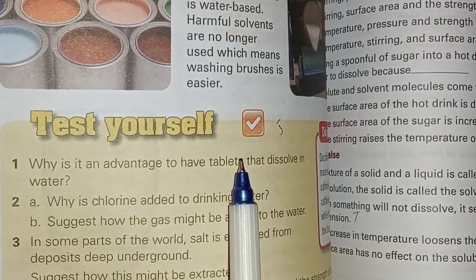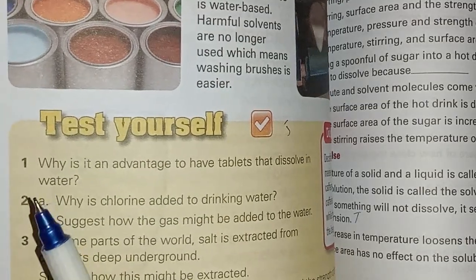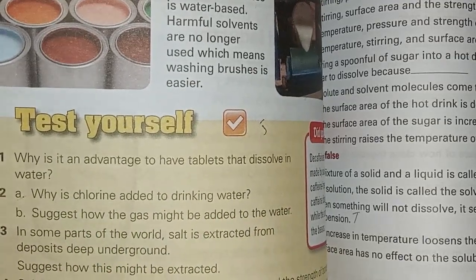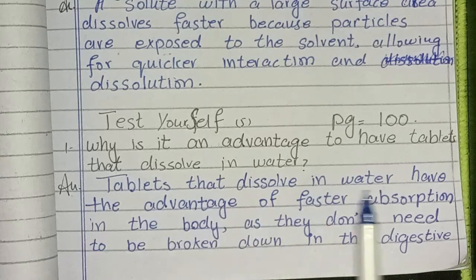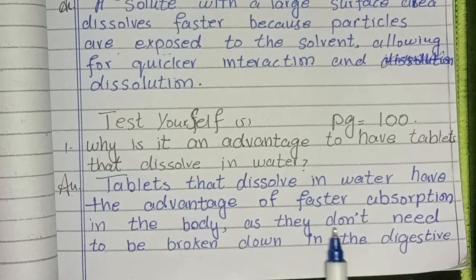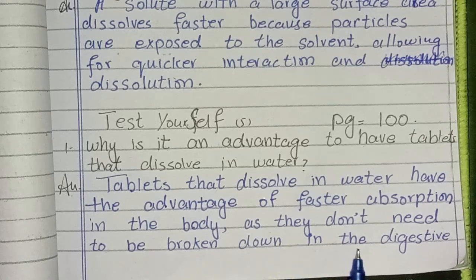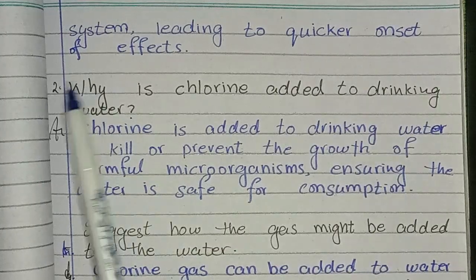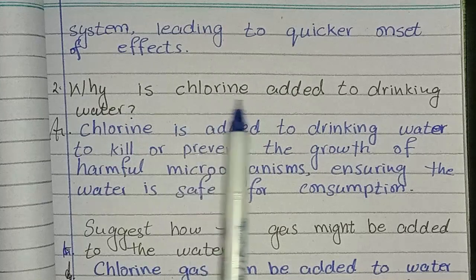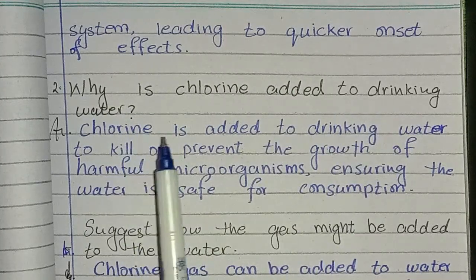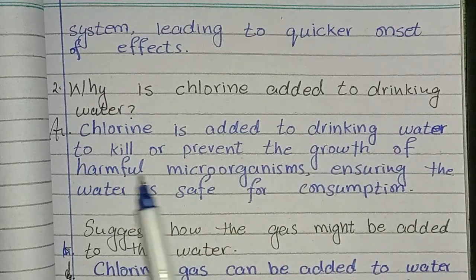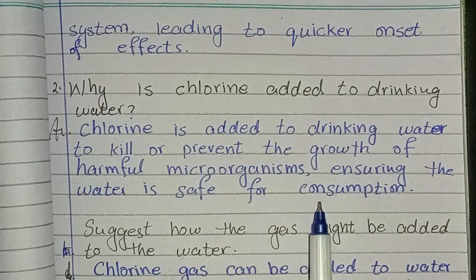This is the last Test Yourself of the chapter, on page number 100. First question: why is it an advantage to have tablets that dissolve in water? Tablets that dissolve in water have the advantage of faster absorption in the body, as they don't need to be broken down in the digestive system, leading to quicker onset of effects. Next question: why is chlorine added to drinking water? Chlorine is added to drinking water to kill or prevent the growth of harmful microorganisms, ensuring the water is safe for consumption.